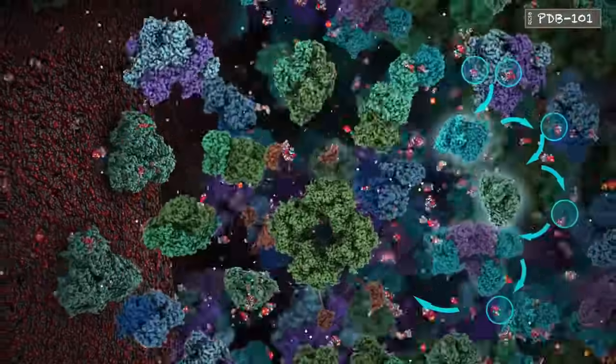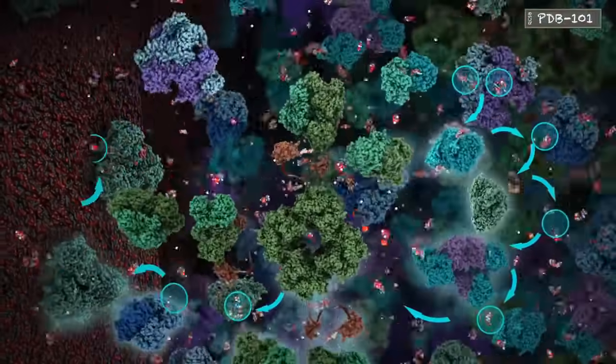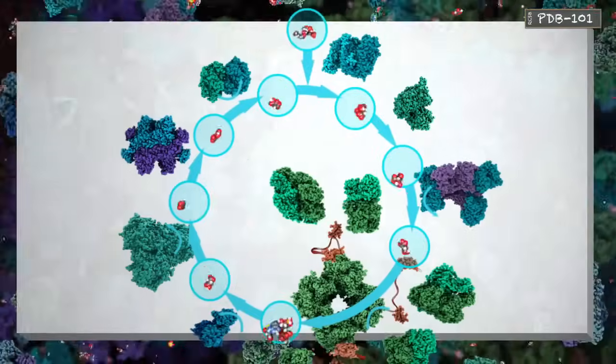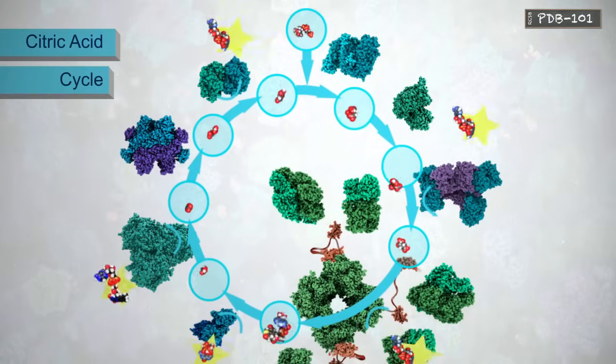These enzymes often work together to form longer pathways, such as the citric acid cycle, which is a series of chemical reactions used by cells to generate energy from carbohydrates.